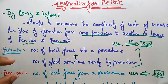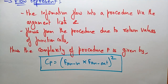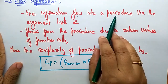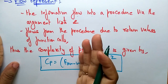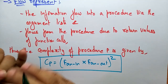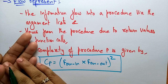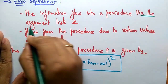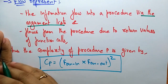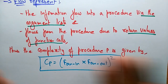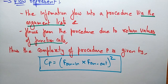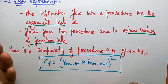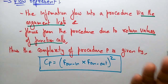The flow into a processor occurs via the argument list — the attributes, variables, and functions you are using represent the information flow into a processor. The flows from the processor are due to the return values of function calls. So if you want to read data, you use the argument list — that is the information flow taken from the user.